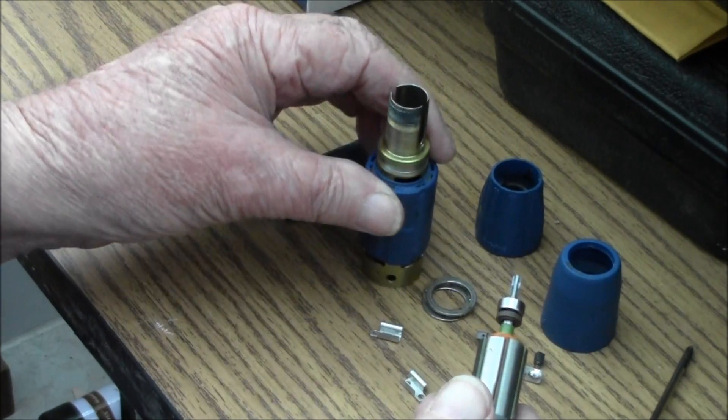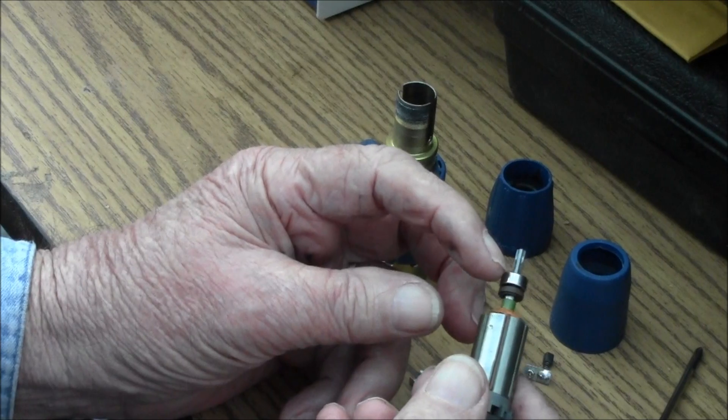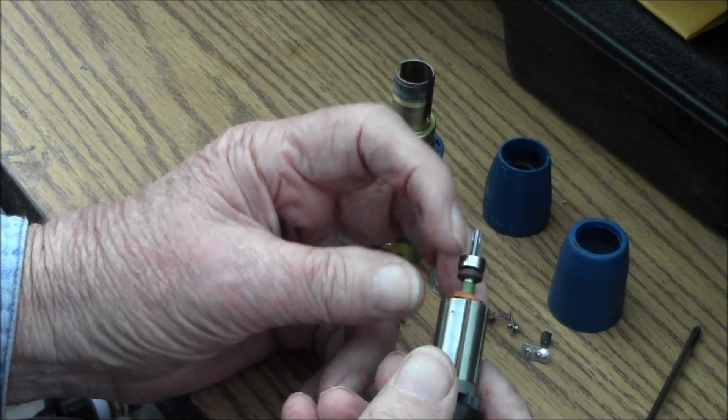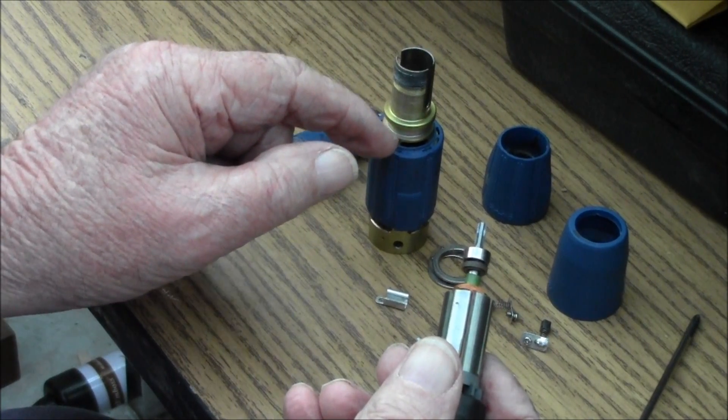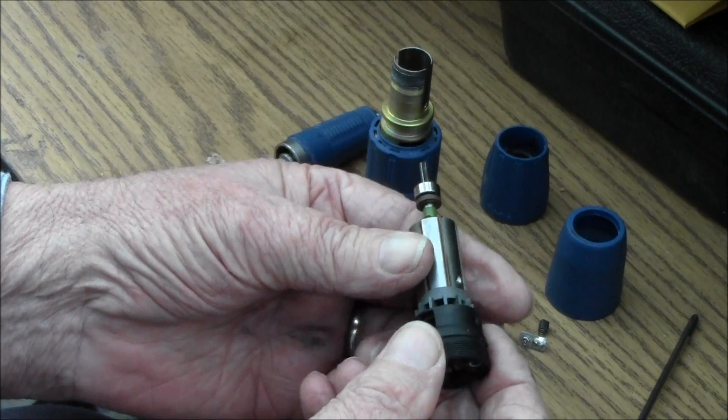Now sometimes, let's set that down. Sometimes it comes out with this bearing still on the armature. Sometimes you take it out the bearing might stay in the housing. Don't really matter.